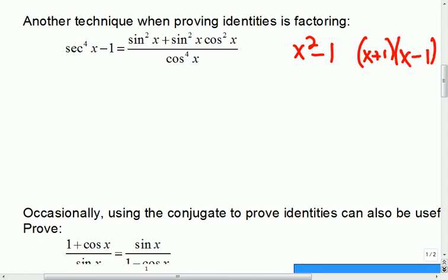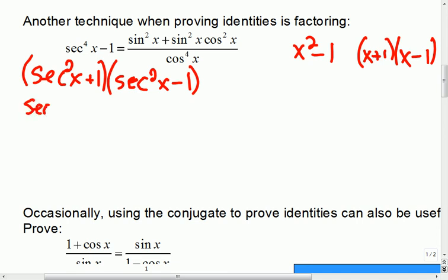You might not recognize this, but this is the difference of squares. So, you might not recognize it here. But if I did factor this, like James said, I would have secant squared x plus 1, secant squared x minus 1. And the reason it can be helpful is if you look at it, there's an identity up there now. The right one becomes tangent. So, we could write this as secant squared x plus 1 times tangent squared x.